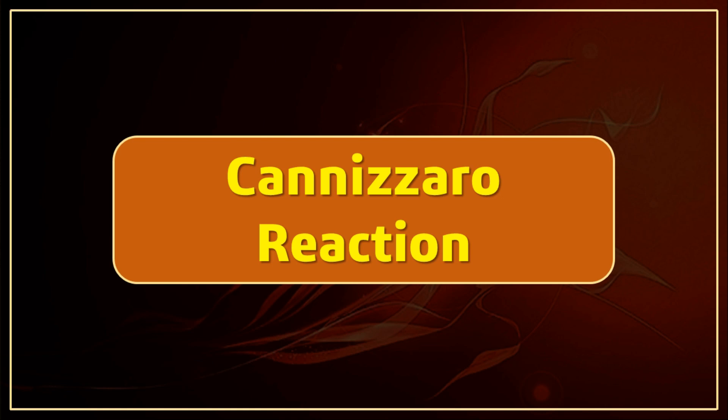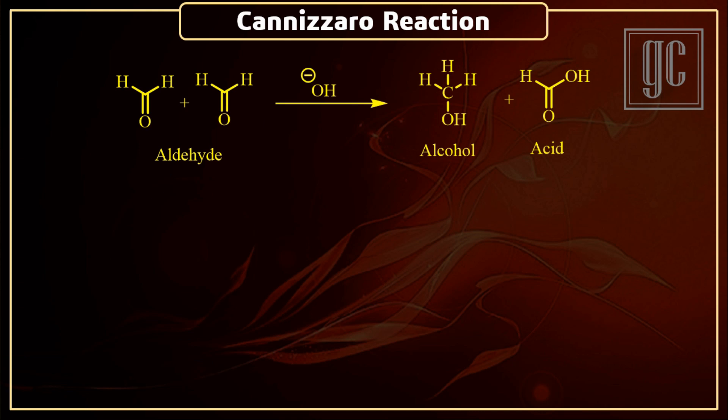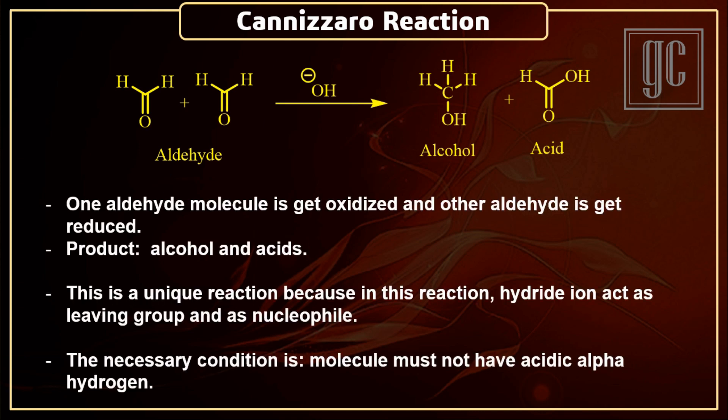In this video we are going to discuss the Cannizzaro reaction. This reaction is given by aldehyde molecules. In this reaction, in the presence of a strong base, two aldehydes react with each other. One aldehyde molecule gets oxidized and the other aldehyde gets reduced, and as a result alcohol and carboxylic acid are obtained as final products.